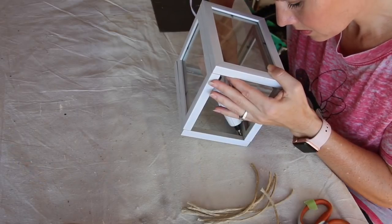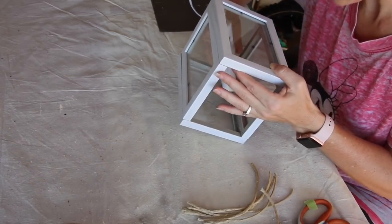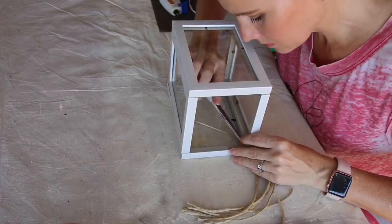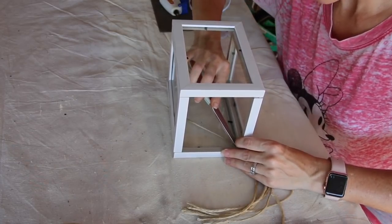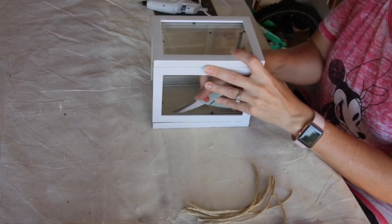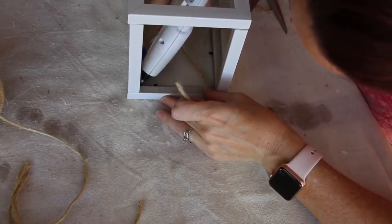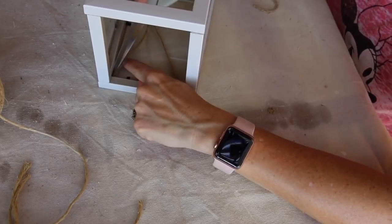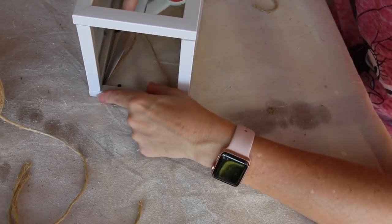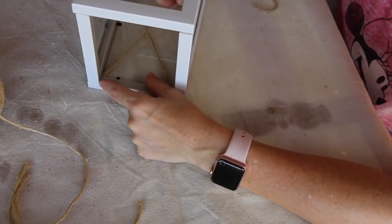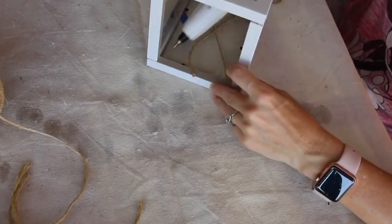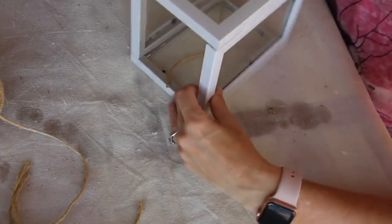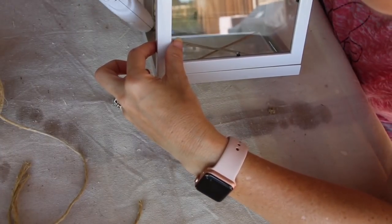I decided to take the hemp and do like an X pattern on all four of the glass panes. I'm going to add the hot glue and then I'll put the hemp in the corner, and you'll see that I used the scissors to kind of press it into that corner nice and tight, and also so I will not burn myself. And then I'm going to take it down to the bottom and do the same thing, and just keep repeating that pattern until all four panes have that X shape.